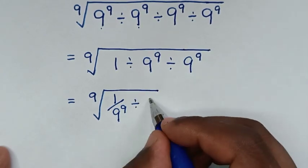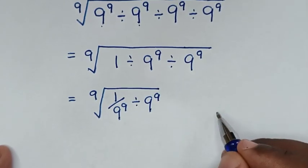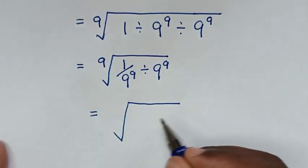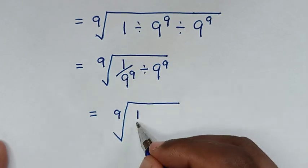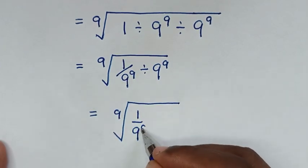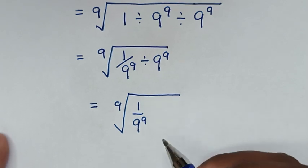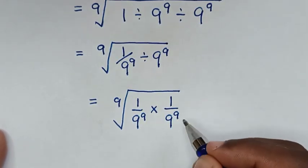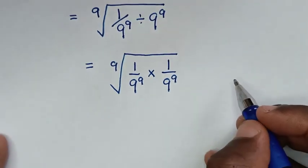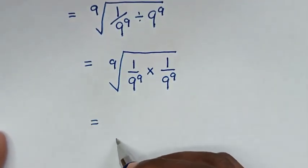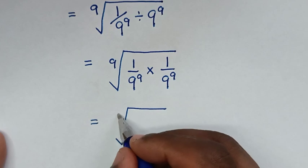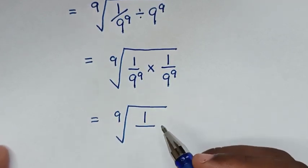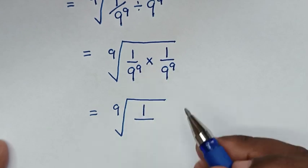Then divide by this 9 power of 9. Then in the next step, it will be equal to 1 over 9 power of 9. Then divide by 9 power of 9, which is the same as times 1 over 9 power of 9. Then in the next step, it will be equal to the 9th root of 1 times 1, which is 1, over 9 power of 9 times 9 power of 9.